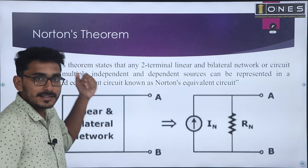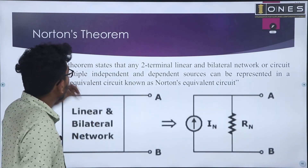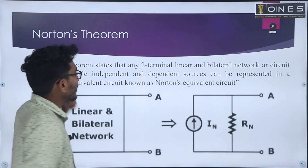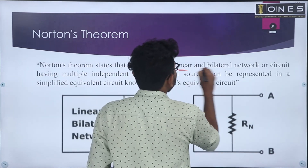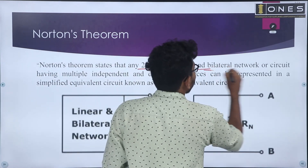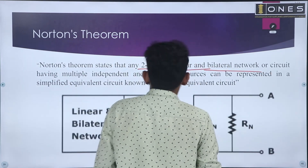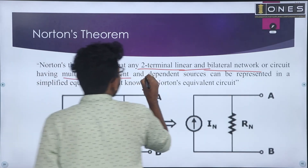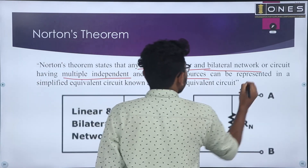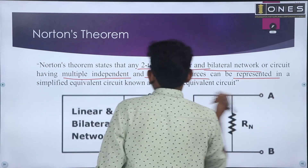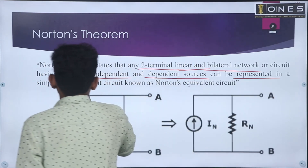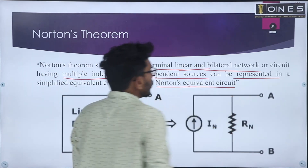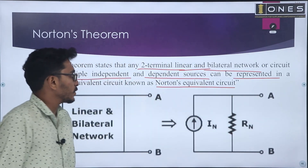Norton's theorem states that any two-terminal, linear and bilateral network or circuit having multiple independent to dependent sources can be represented in a simplified equivalent circuit known as the Norton's equivalent circuit.